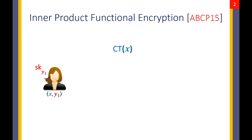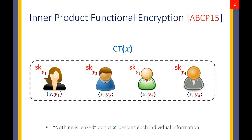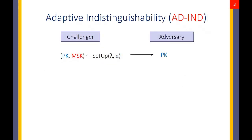Security guarantees that a key holder learns nothing about the message except the inner product. In the case of multiple key holders that collude, it should still be impossible for them to learn new information about the message besides what each individual key reveals. To capture this intuition, both indistinguishability and simulation-based security definitions have been considered, and both will be discussed in the next couple of slides.